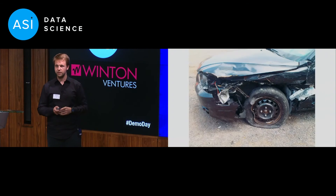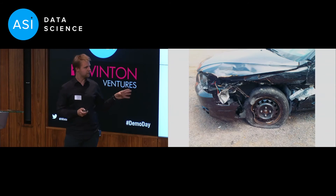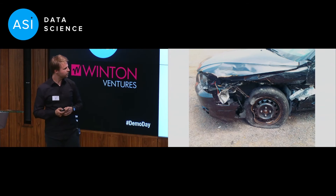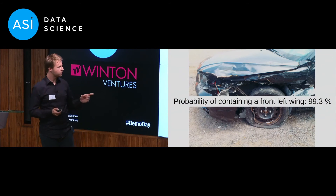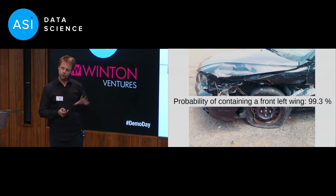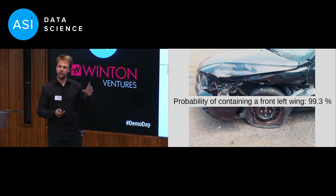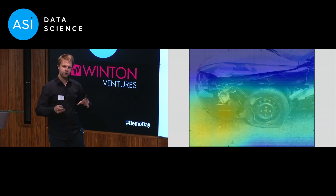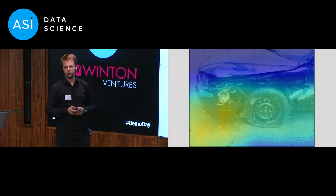So let's have a look at a more difficult image. Given that we're dealing with insurance claims, this is not an unlikely one to actually come up. The front left wing is pretty much destroyed, but let's see whether the network can actually detect it. Yes, it can — with a probability of more than 99%, our neural network tells us there is a front left wing in here somewhere. However, when we run the algorithm we have in place, that is not looking very good, so we have to come up with a better algorithm.